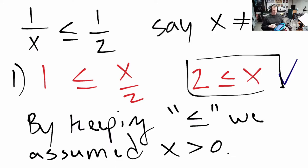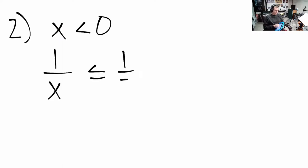But what if it's negative? So case 2: x < 0. Well then our inequality, what do we have? If we multiply both sides by x and multiply both sides by 2, we've got something different. We've got 2 ≥ x.